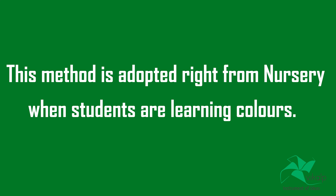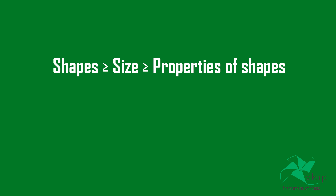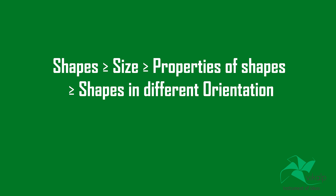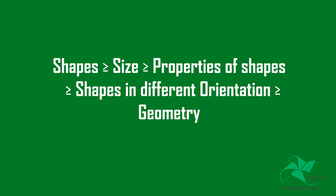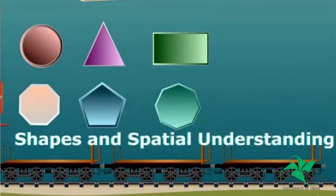Students are not exposed to this method of learning just a few years before the competitive exam. This method is adopted right from nursery — when students are learning colors, in the next class they are introduced to shapes, then size, then properties of shapes, shapes in different orientations, then geometry, and it goes on. This is how the strand named Shapes and Spatial Understanding progresses from nursery to Grade 10.